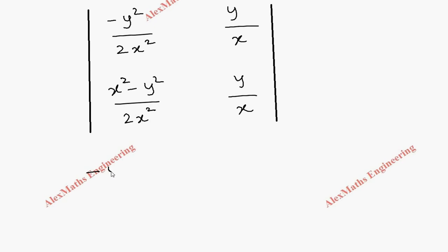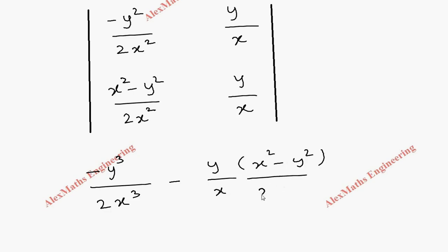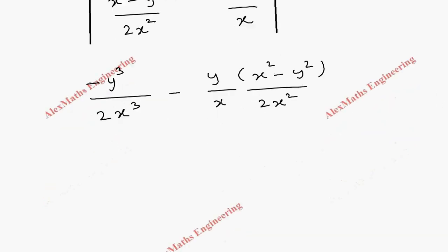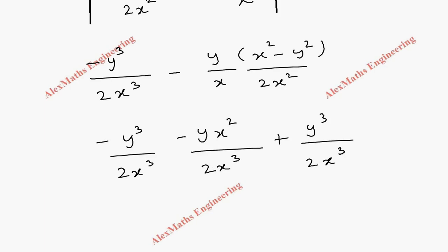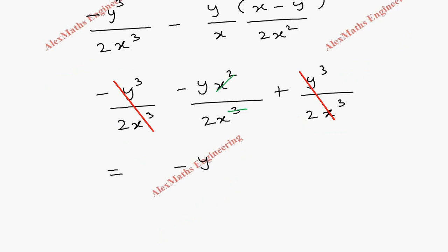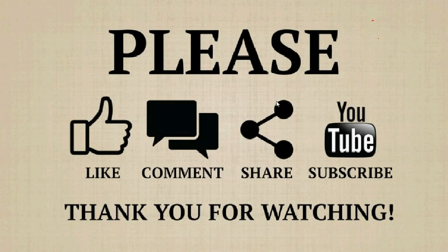Multiplying along the leading diagonal: (−y²/2x²)(y/x) = −y³/2x³. Minus the off-diagonal product: (y/x) × (x²−y²)/2x² = y(x²−y²)/2x³, which expands to y³/2x³ subtracted. The positive y³/2x³ and negative y³/2x³ cancel, leaving the remaining term as −y/2x.